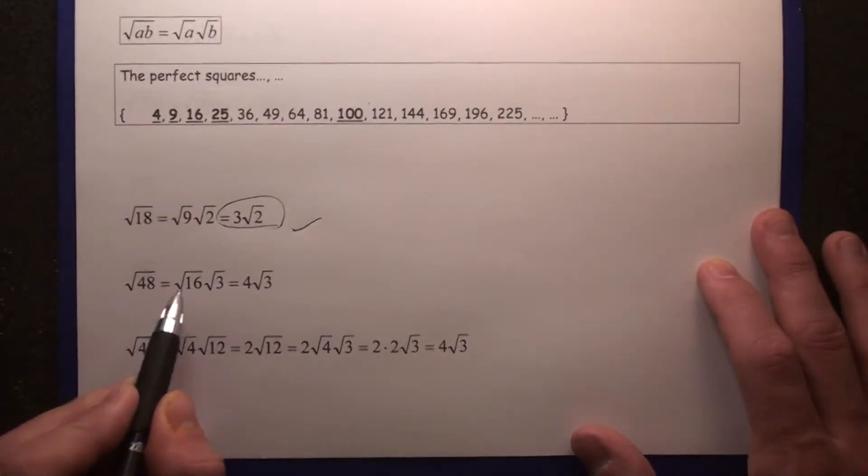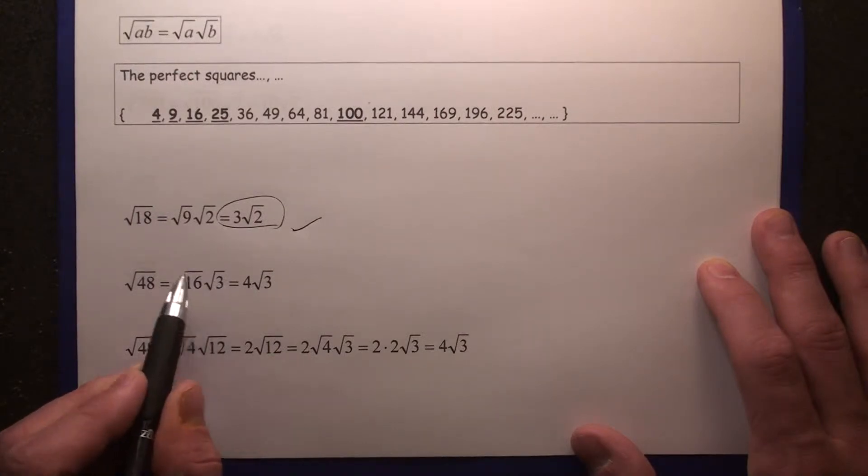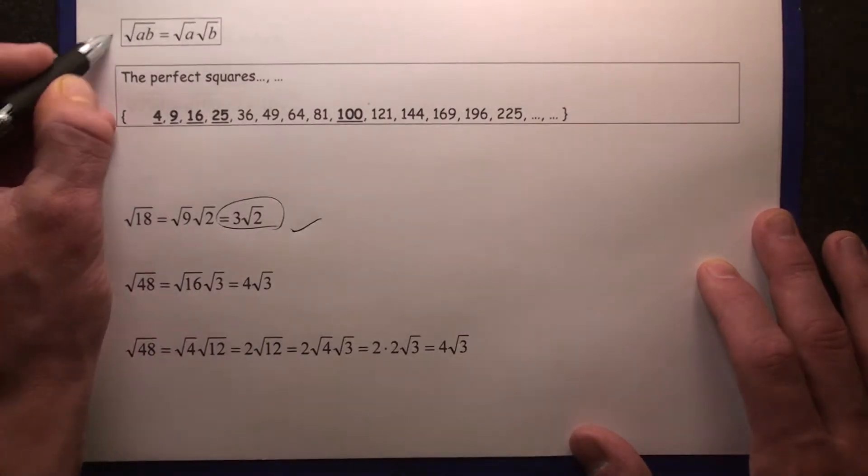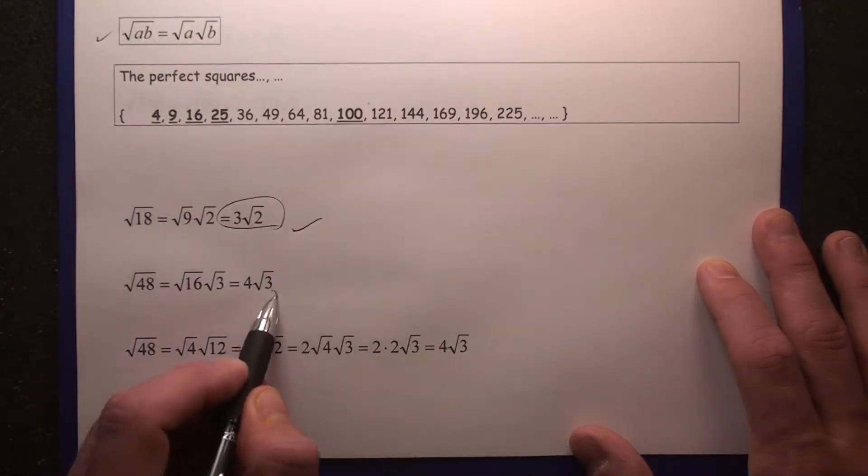The square root of 48: 16 times 3 is 48. Therefore, root 16 times root 3 equals root 48 according to this property. The square root of 16 is on our list. The square root of 16 is 4. 4 root 3.